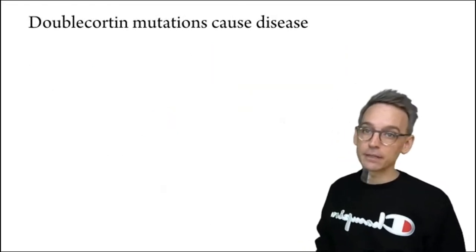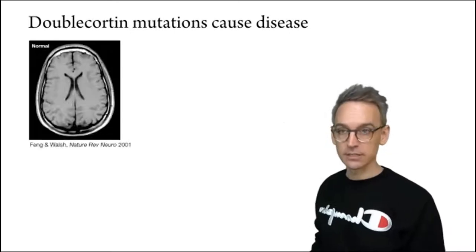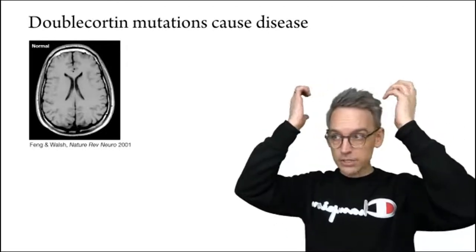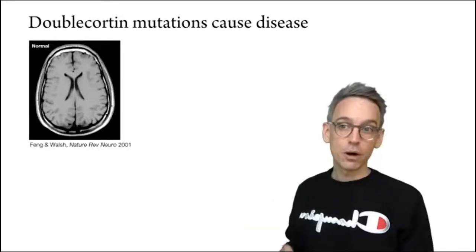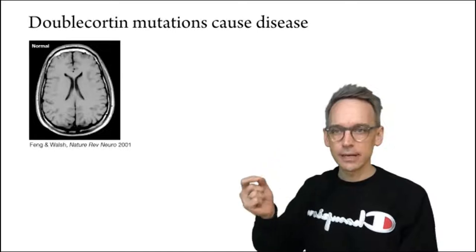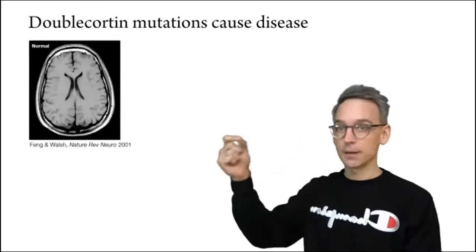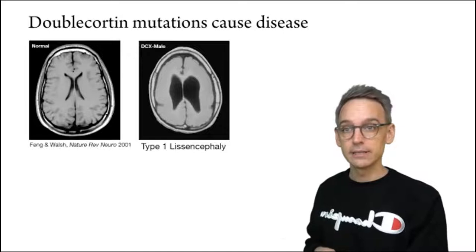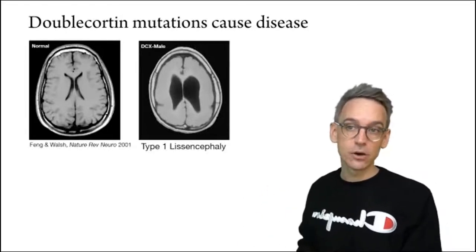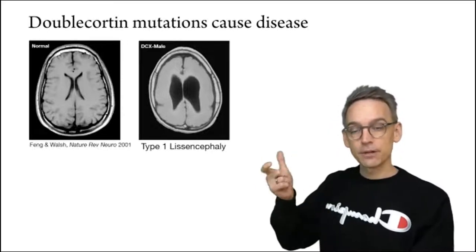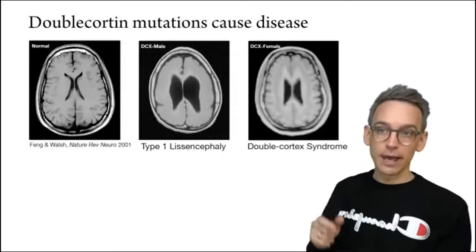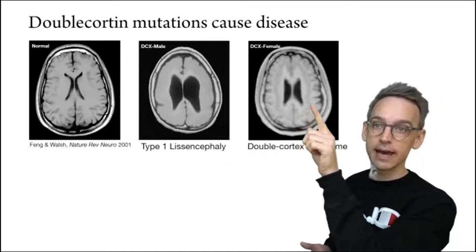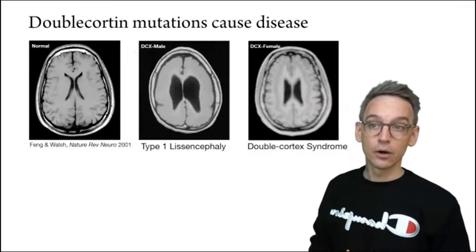So I'll tell you just a little bit more very quickly about the protein that I work on, doublecortin. Mutations in this protein cause disease. So this is an MRI scan of a healthy human brain. You can see the folds on the outside of the cerebral cortex. These are the so-called sulci and gyri of the brain. If you are a male and you have a point mutation in doublecortin, just a single amino acid that goes from being an arginine to something else or whatever, you completely lose the folds of the cerebral cortex. You have what's called type 1 lissencephaly or smooth brain disease.